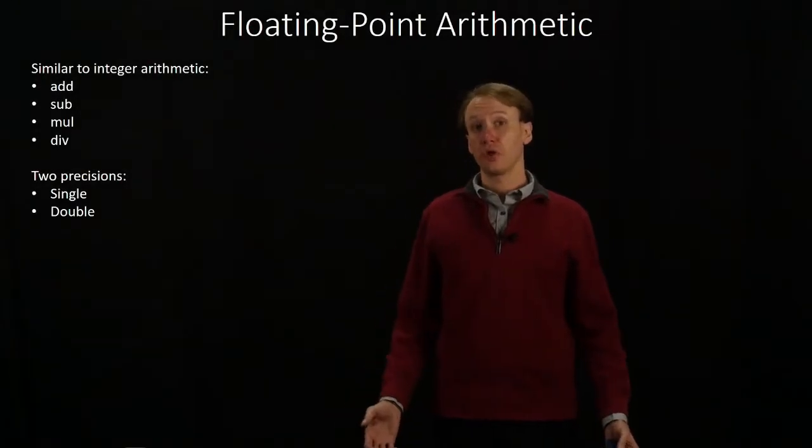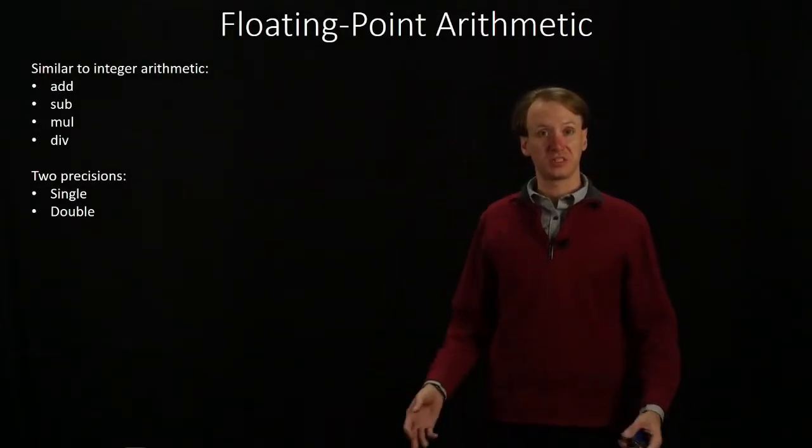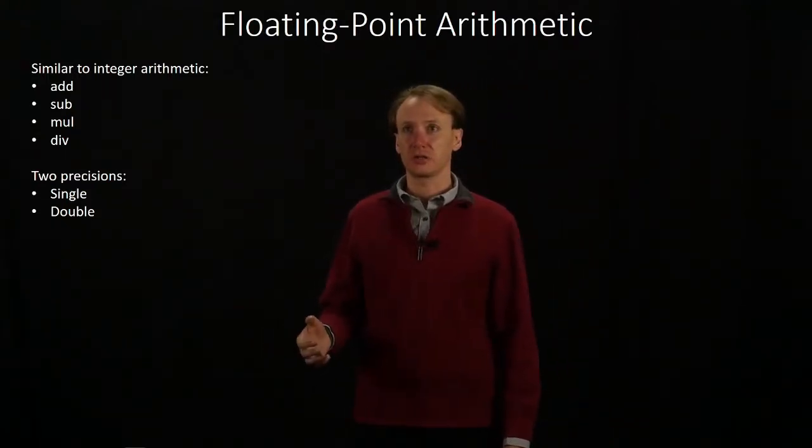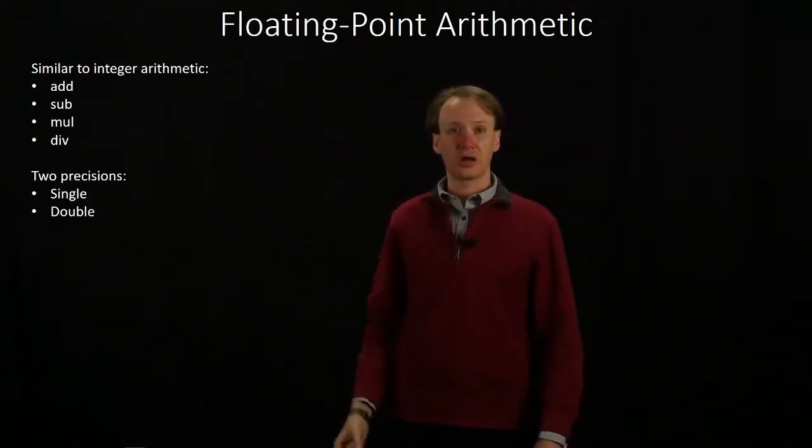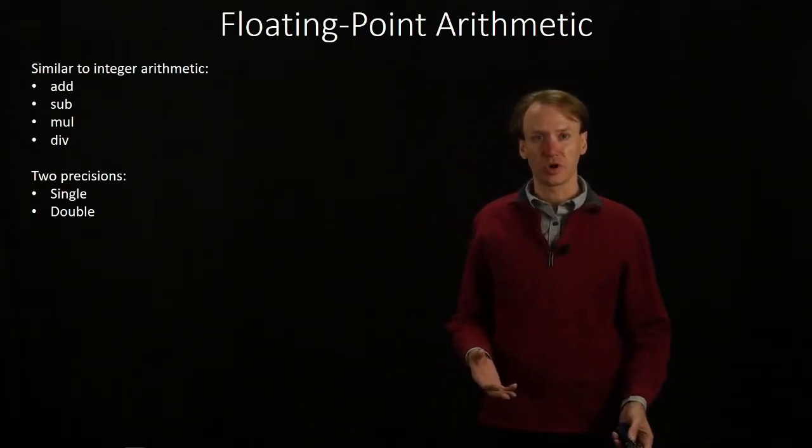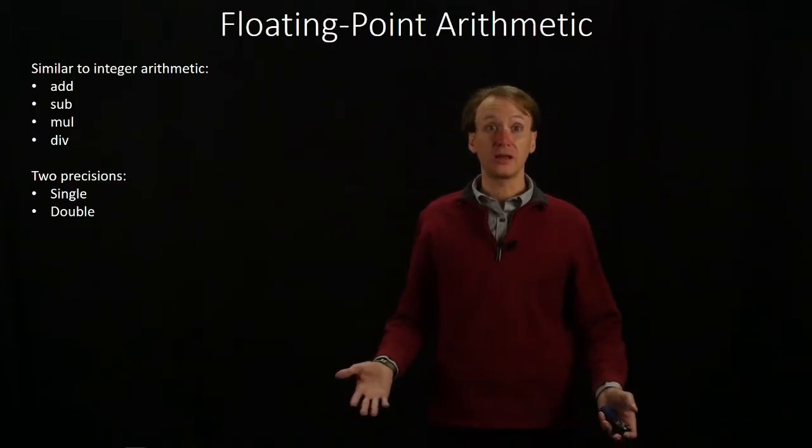This time we're going to look at floating-point arithmetic in the MIPS assembly language. It's similar to doing integer arithmetic in that we've still got add, subtract, multiply, and divide. We won't have any way to do a remainder operation because there isn't any remainder with floating-point division anyway.